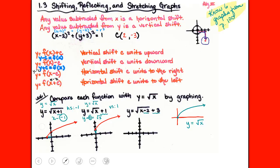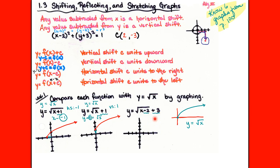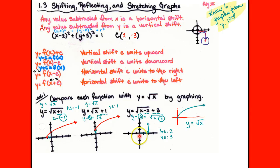For the next one, comparing to the original, there are two things different: a negative 2 grouped with x and a positive 3 that can be moved to the other side. The negative 2 is grouped with x — horizontal shift. The positive 3 can be moved to the other side — vertical shift. The horizontal shift is positive 2 (subtracting 2 from x), and the vertical shift is positive 3 (subtracting 3 from y). So we start at the origin, horizontally shift to positive 2 and vertically shift to positive 3, then draw that same graph from that point.